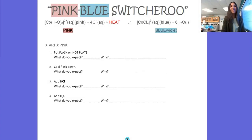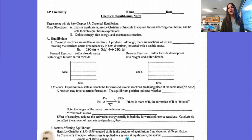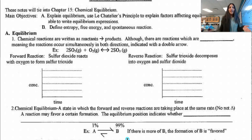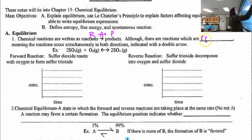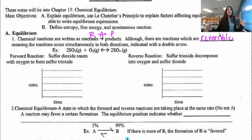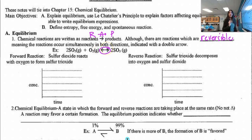Let's come right back and talk about Le Chatelier's principle. Chemical reactions are going to be written as RAP — reactants, arrow, products. Although there are reactions that you can flip — we call them reversible — meaning that reactions can go simultaneously in both directions, indicated with a double arrow.